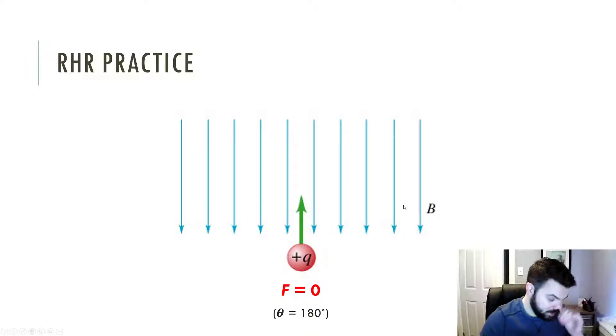If we think about the equation that it's Q V B sine of theta, the sine of 180 degrees is zero. So if you're going along the B field or directly against the B field, in other words if that angle is zero degrees or 180 degrees, there'll be no force at all. Any other angle, there will be some force. 90 degrees, you'll get the most force. But no force here because you're not moving perpendicular to the magnetic field.